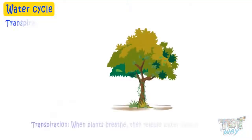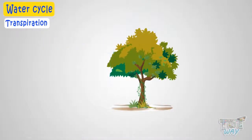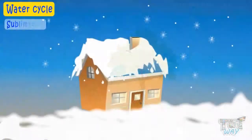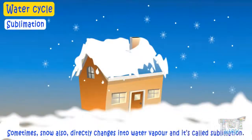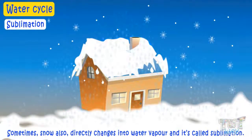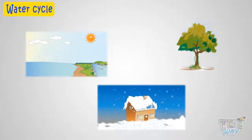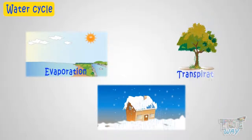When plants breathe, they release water vapors along with oxygen, which is called transpiration. Sometimes snow also directly changes to water vapors, and it's called sublimation. So there are three processes by which water is converted to gaseous state: evaporation, transpiration, and sublimation.